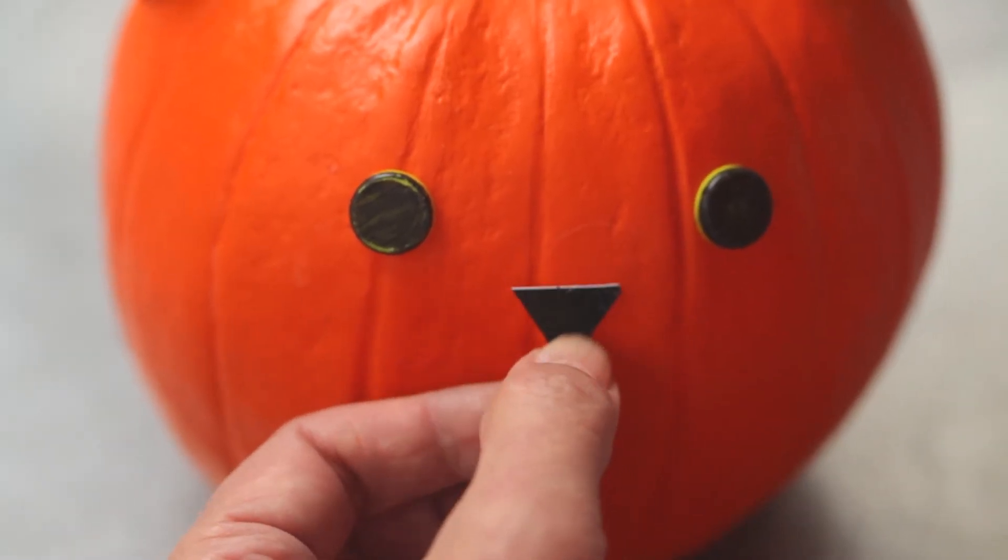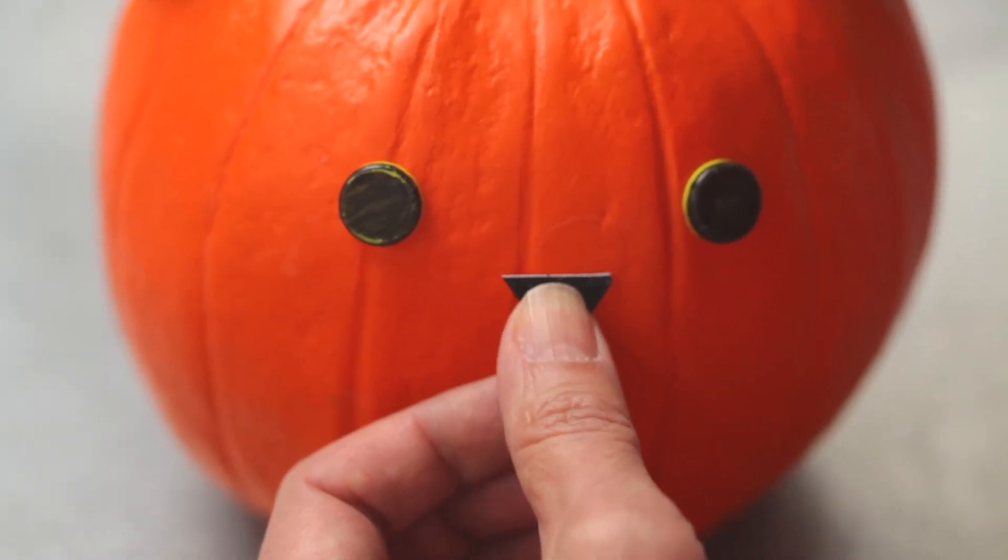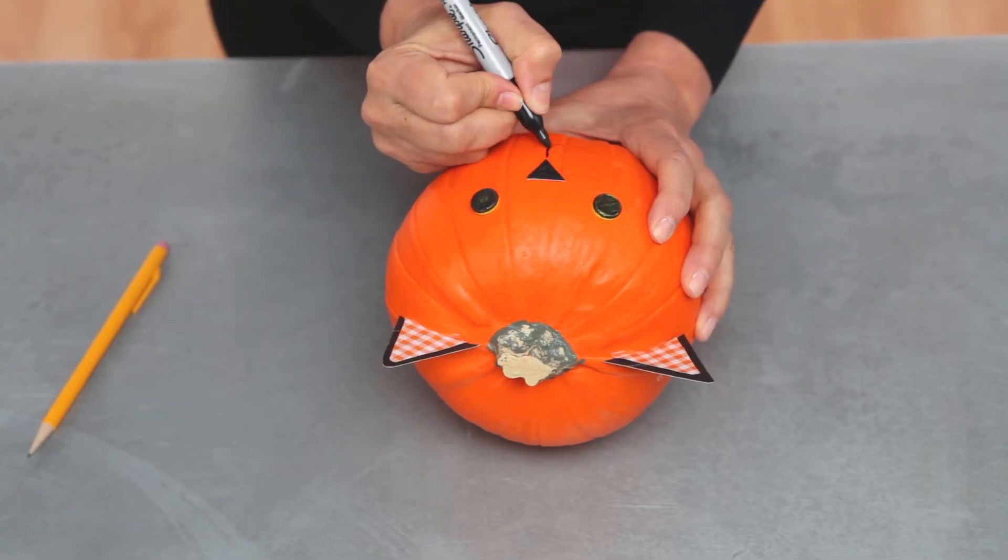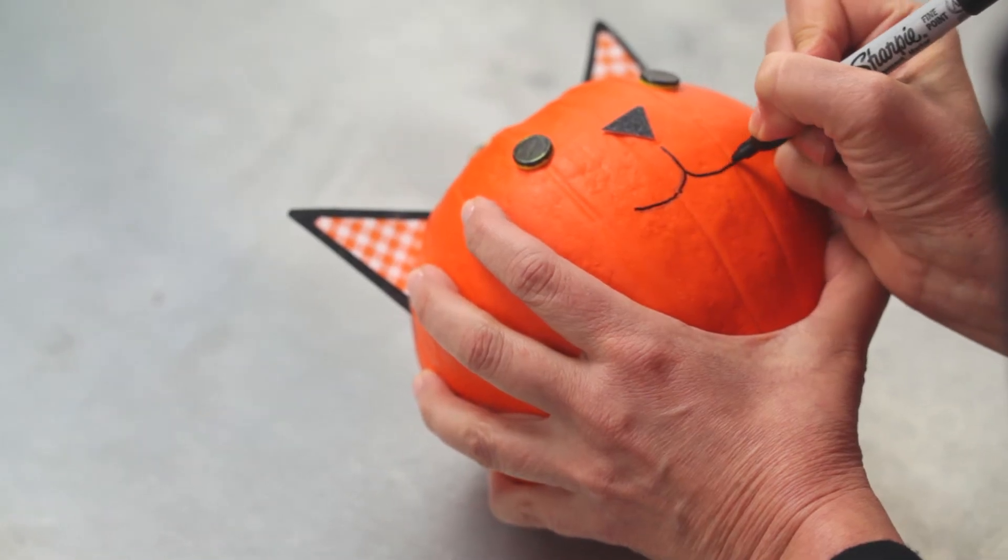Cut a small black triangle out of glitter cardstock and glue that on for the nose. Draw on the mouth first in pencil then in marker. Use glue dots to glue on wire whiskers.